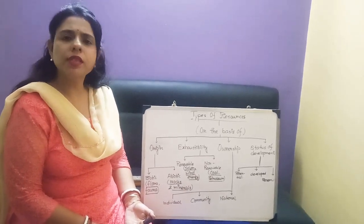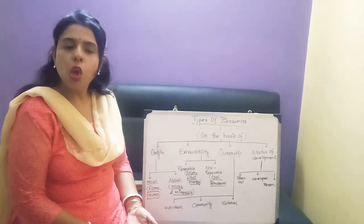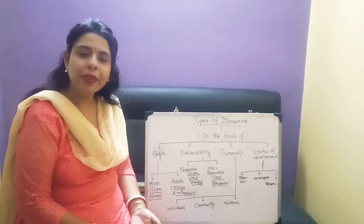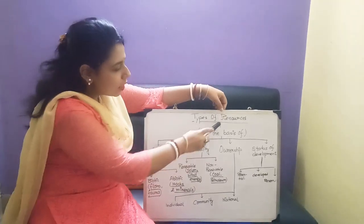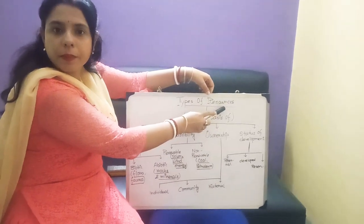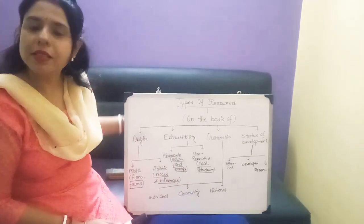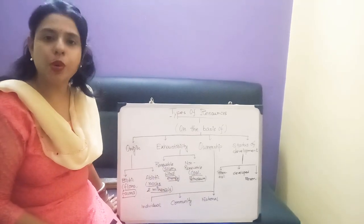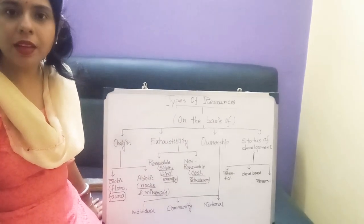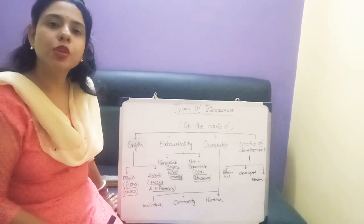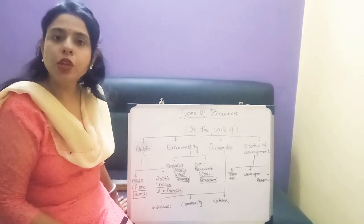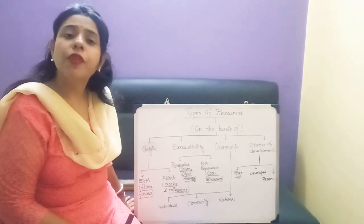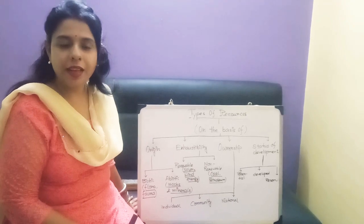Before going to discussion about the resource, we should know what is resource. Etymologically, the term is divided in two parts — one is 're' and another is 'source'. That means the substances which actually fulfill our needs is known as resource. Zimmerman defined the term resource first. According to him, the substances which has functionality or utility is known as resource.